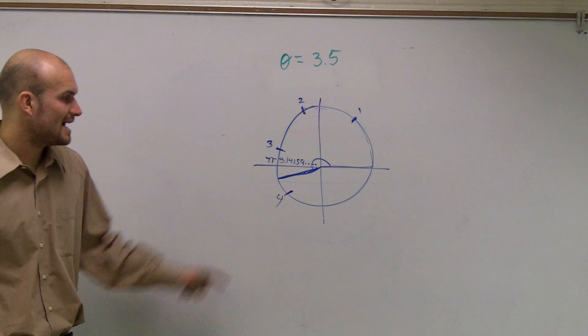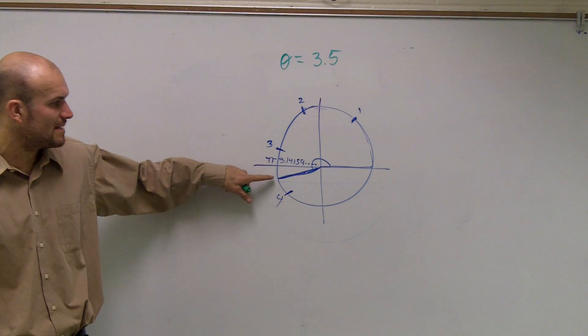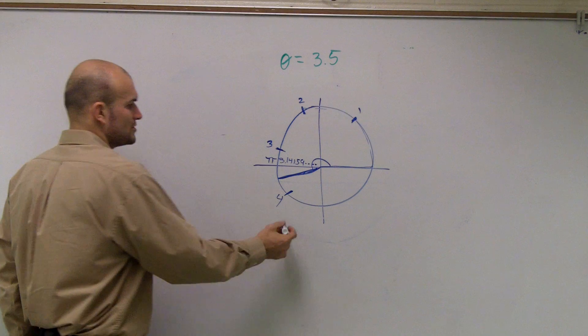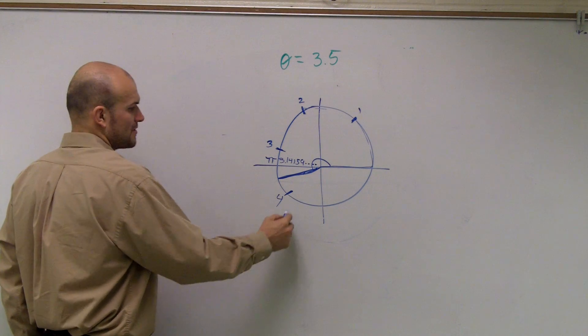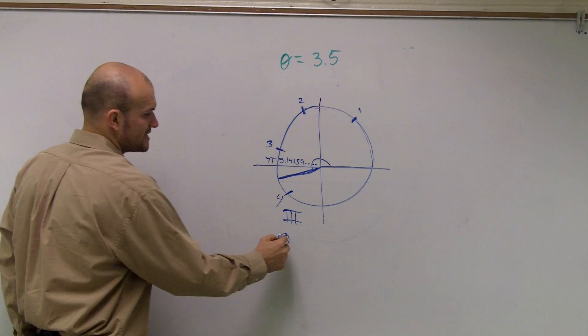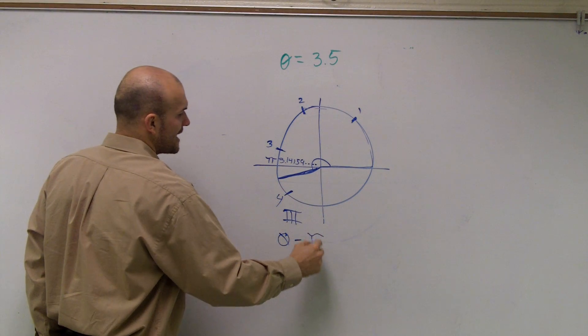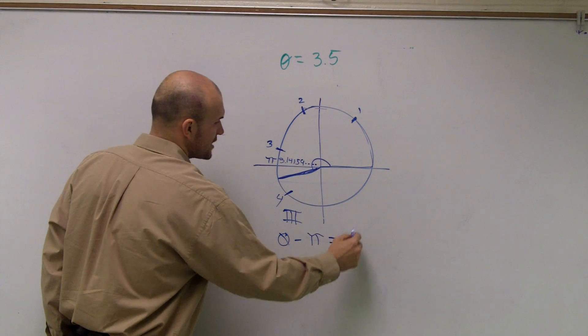So if I want to find the acute angle between my terminal side and the x-axis, what I'm going to have to do is take theta, whenever it's in the third quadrant, if you guys remember your notes, you take theta, which is your angle, minus pi, to obtain your reference angle, which we call theta prime.